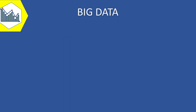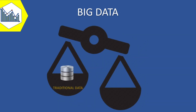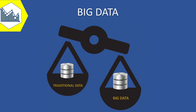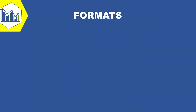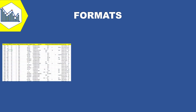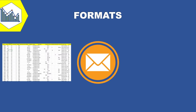Big data, as its name suggests, is big in terms of volume compared to traditional data — but that's not the only reason we call it big. Big data usually has various formats: it can contain structured data like the tables we have in traditional data, and semi-structured data like emails.